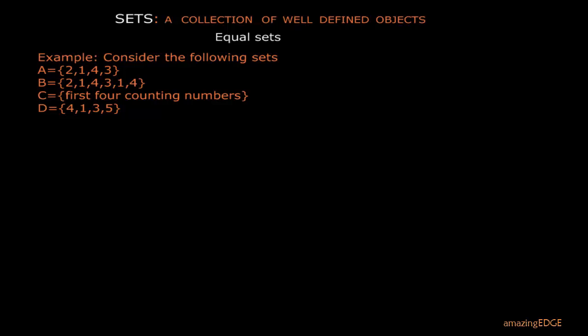B contains the element 2, 1, 4, 3, 1, 4. And C are the elements of the first four counting numbers. And D contains the element 4, 1, 3, 5. Now we have the following observation.